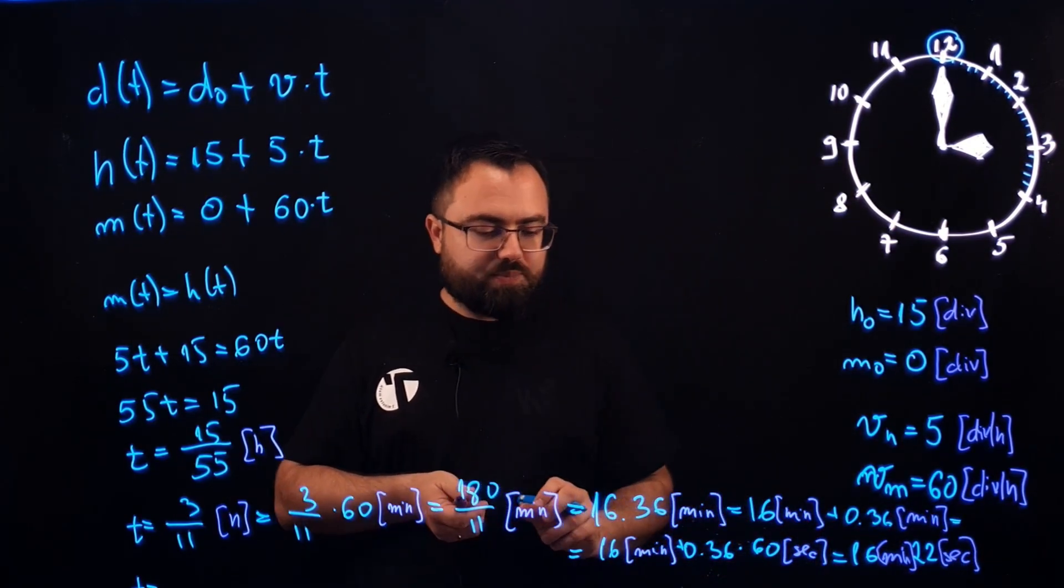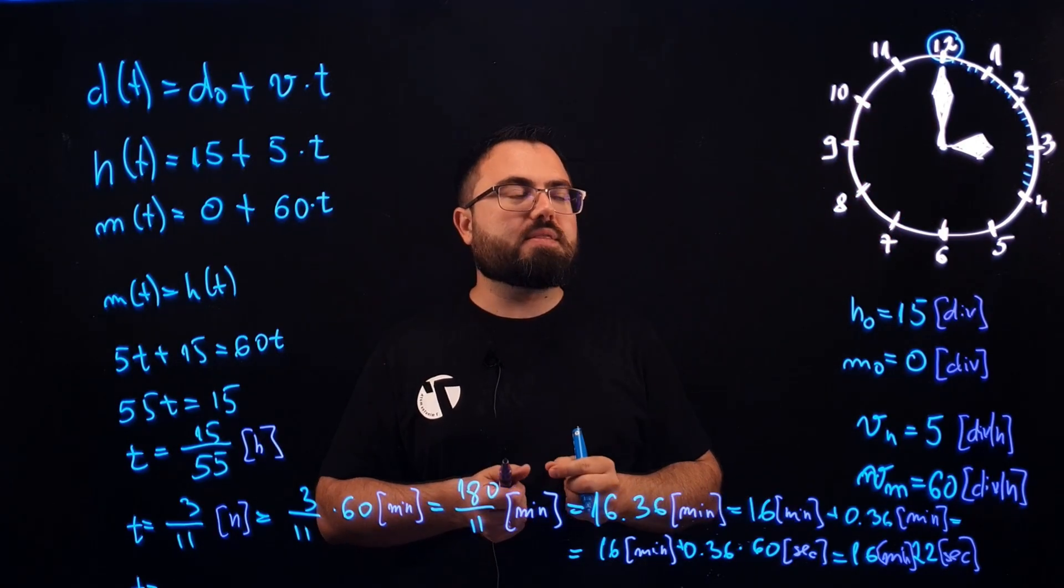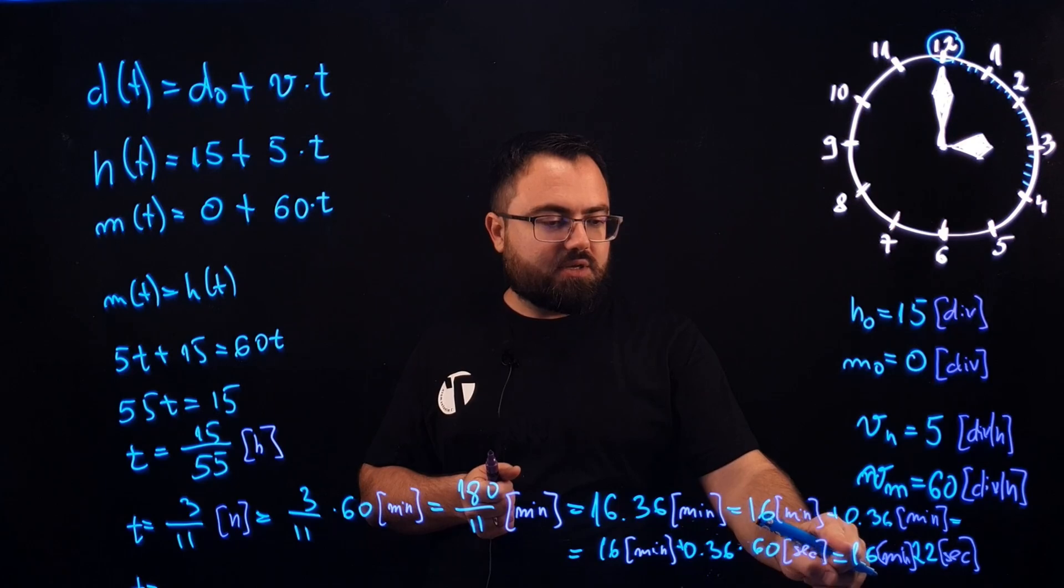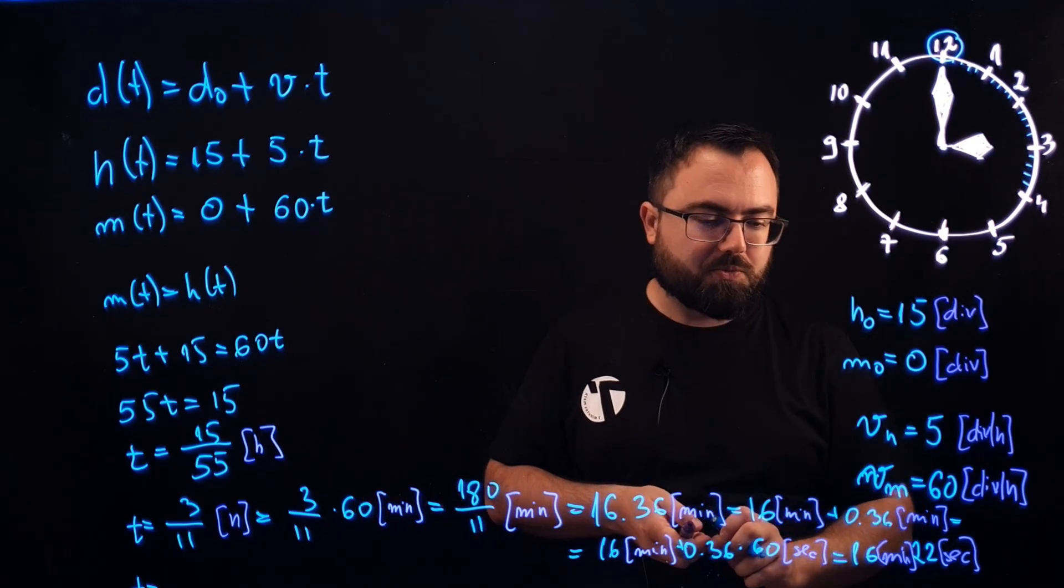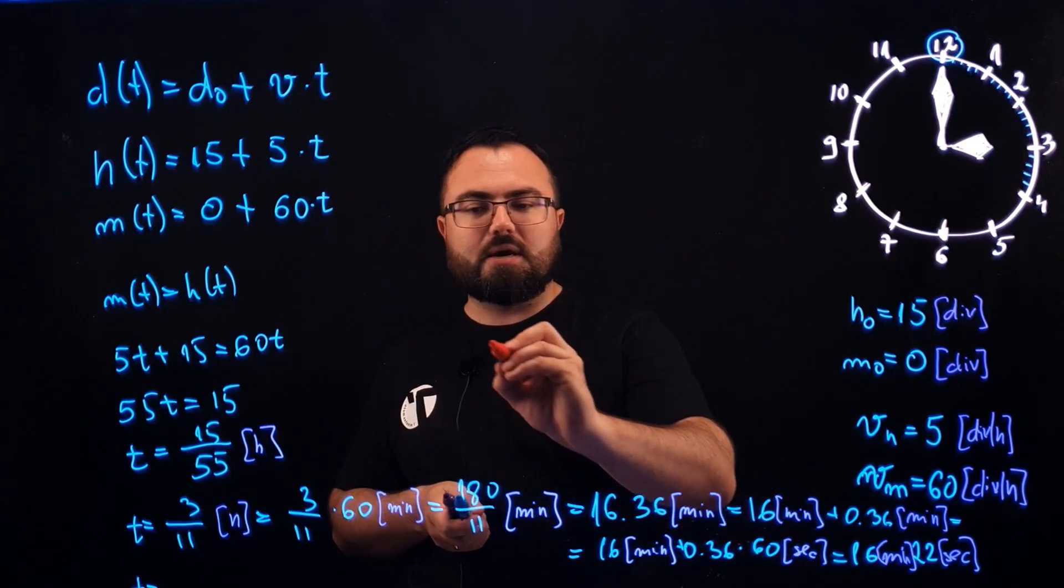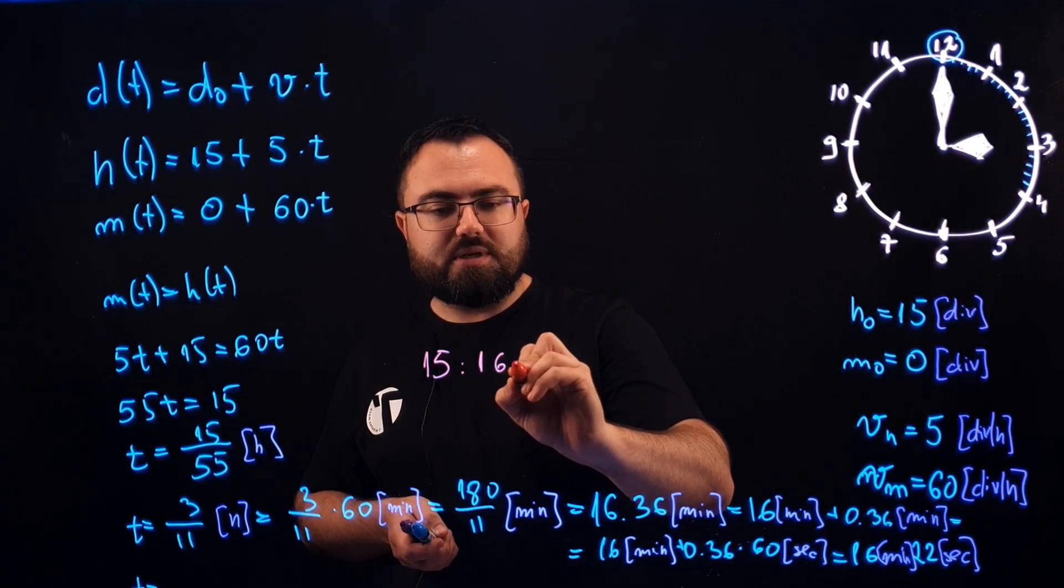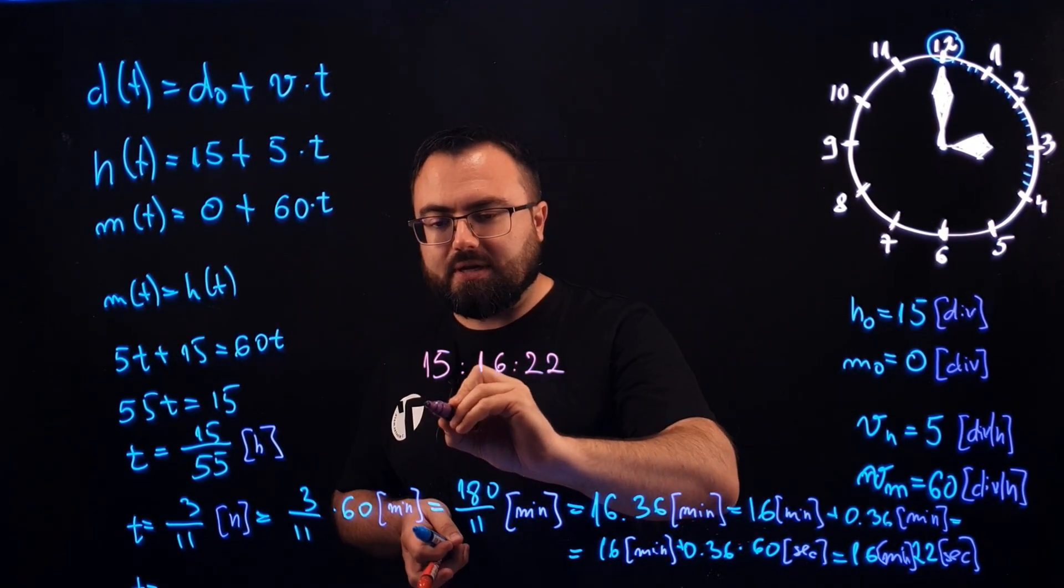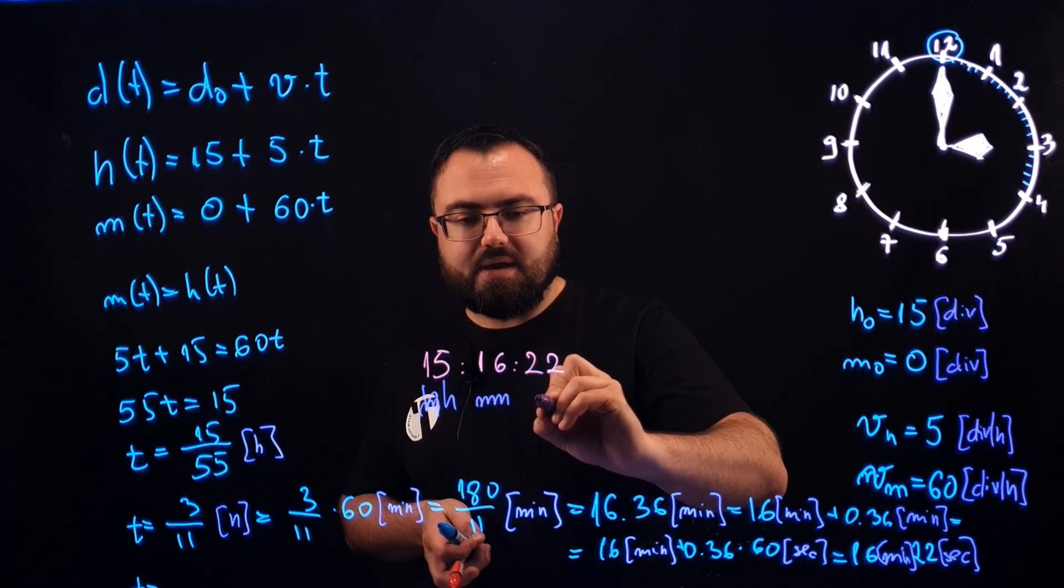So there we go, that would be the final answer. When the hour hand and the minute hand overlap, the time would be 3:16 minutes and 22 seconds. Let's write it in a standard format: 3 hours, 16 minutes, and 22 seconds.